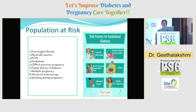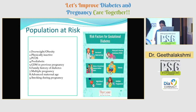The population at risk includes those who are overweight, obese, physically inactive, with polycystic ovarian syndrome, pre-diabetic, with GDM in a previous pregnancy, family history of diabetes, multiple pregnancy, advanced maternal age, and smoking during pregnancy.